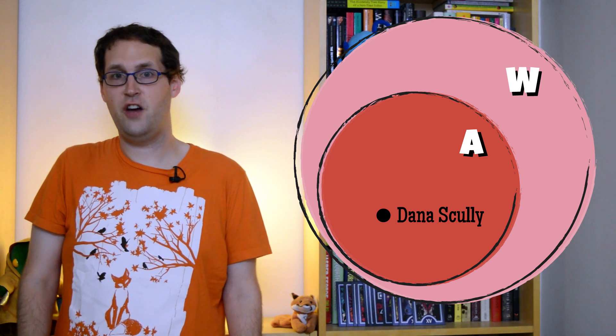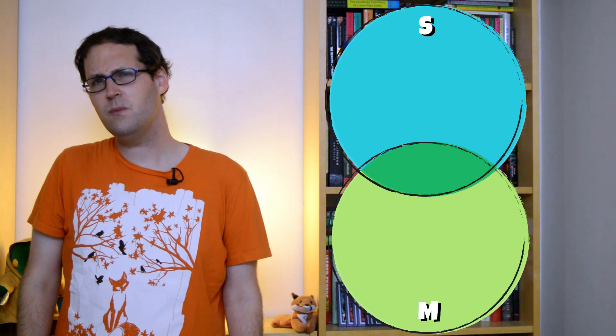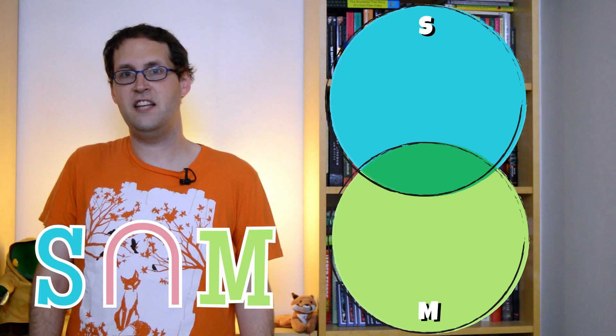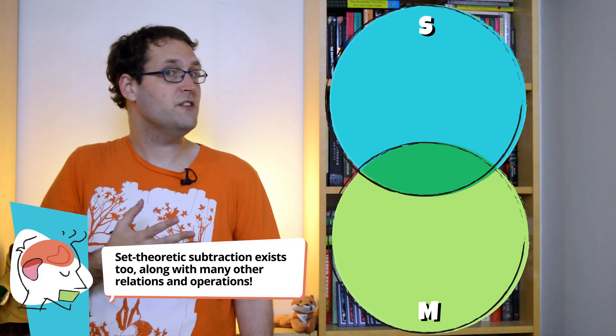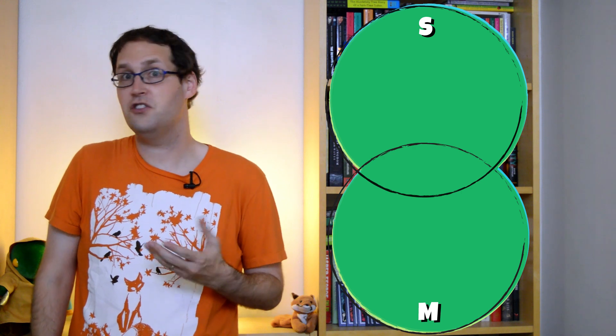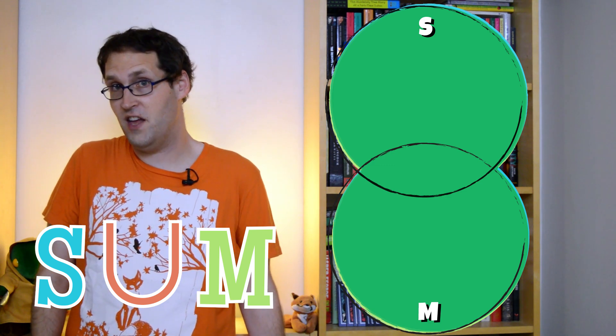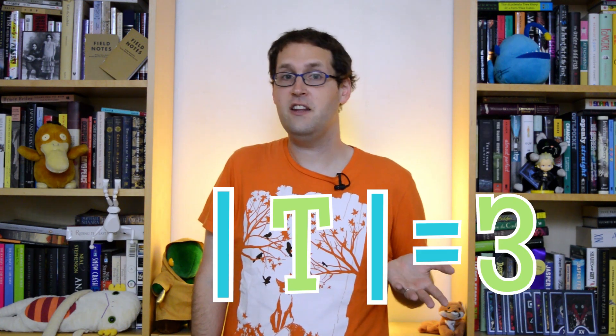We can do more than just relate sets to each other — we can manipulate them too. If we wanted the set of all cigarette-smoking men, we could build it by taking the overlap between the set of all smokers and the set of all men. This operation is known as intersection, written with an upside-down U. We could also combine the whole of two sets — union, written with a plain U — which gives a group bigger than either set alone. Finally, we can count the number of things in a set by sandwiching it between two vertical bars; this is the set's cardinality, which can be any number from 0 to infinity. A set with nothing in it is called the empty set. Spooky.